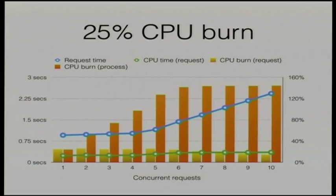Regardless of how many threads we have available to handle requests, we eventually reach a limit of how many concurrent requests we can actually handle before request time starts to increase. The number of concurrent requests we can handle seems to be directly related to the per-request CPU burn, but also with that unexpected ceiling of about 150%, even though we had eight CPU cores.